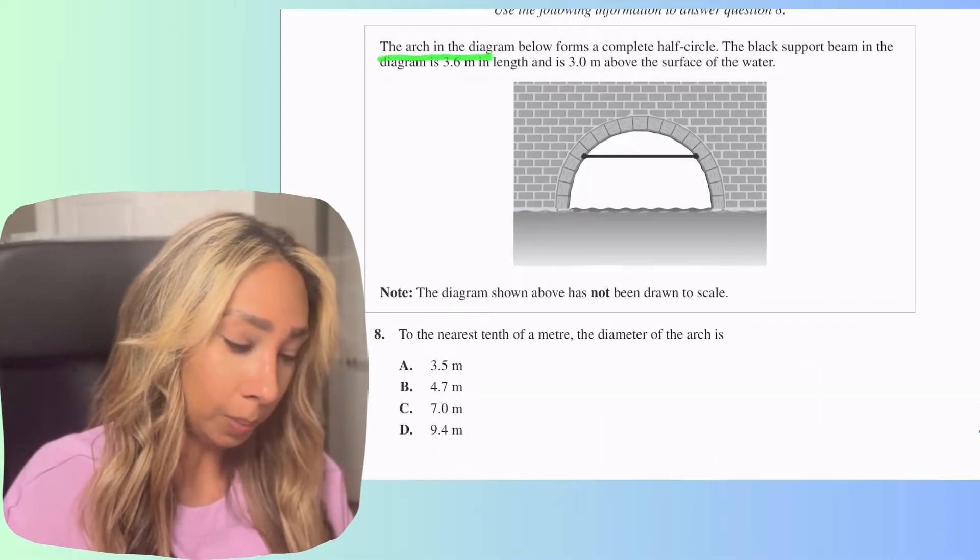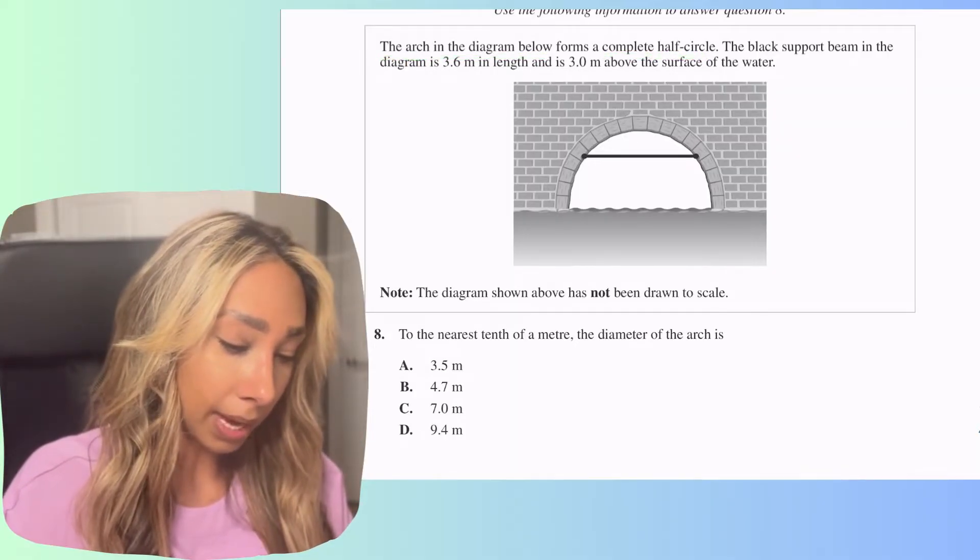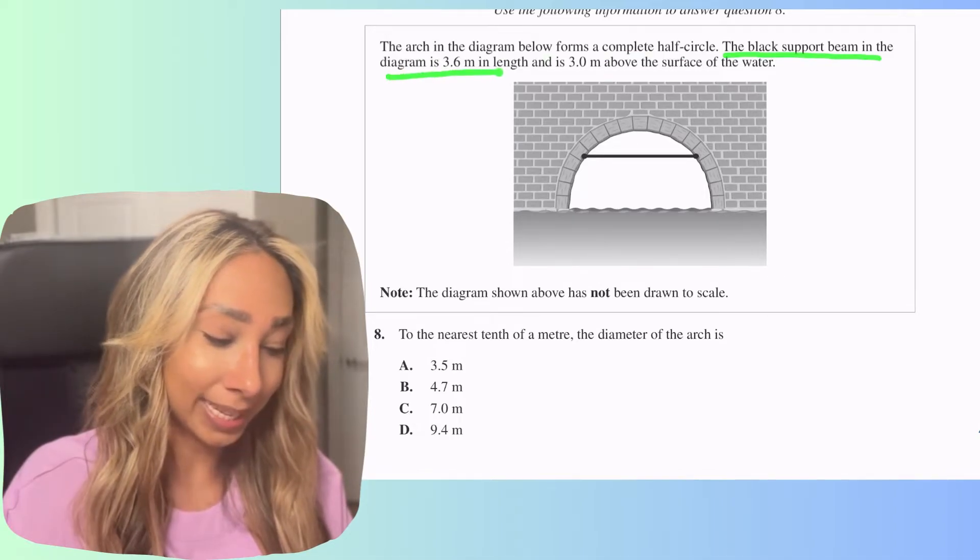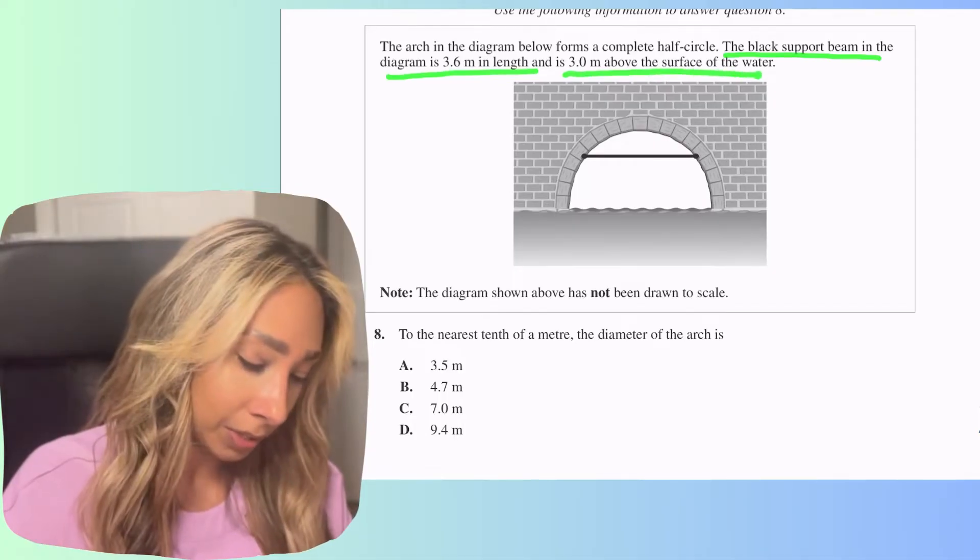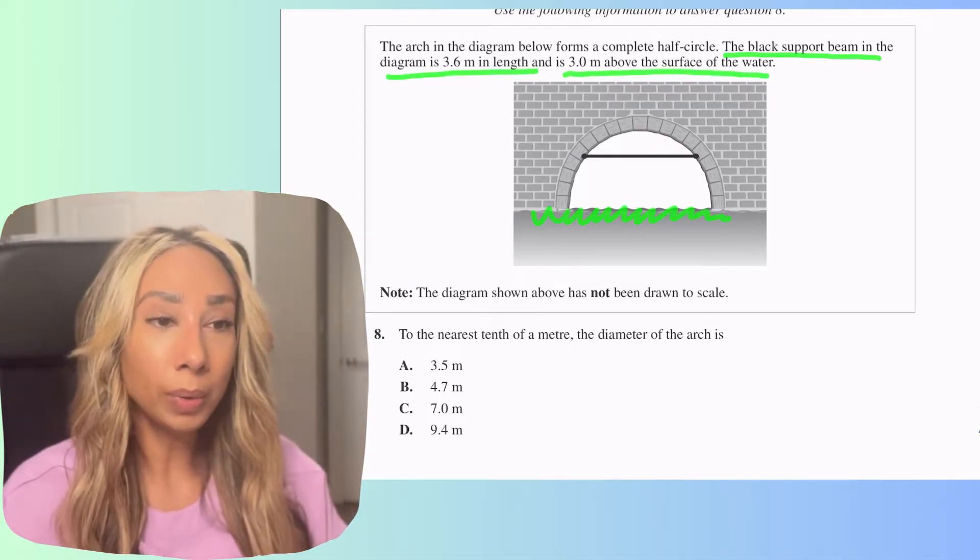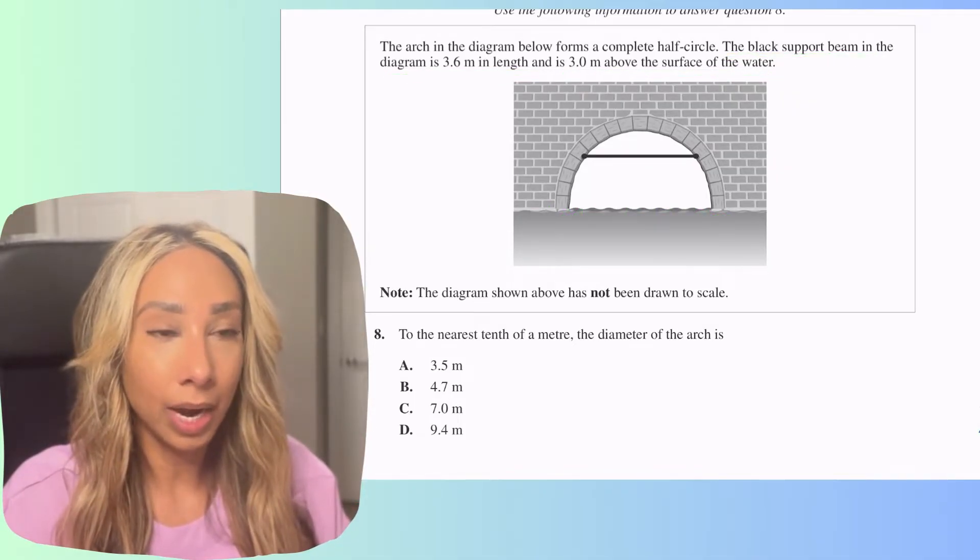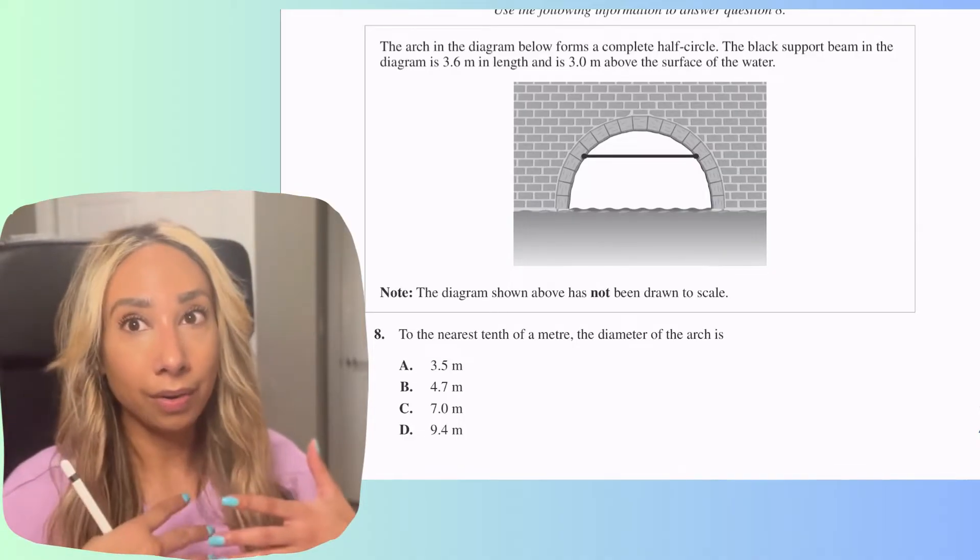Let's go ahead and look at the question. The arch in the diagram below forms a complete half circle. The black support beam in the diagram is 3.6 meters in length and 3 meters above the surface of the water. I'm going to assume that's the part that's the water there. So what we need to do is for something like this we're going to need to draw a diagram and we want to think about how we can move things within the circle in our favor.